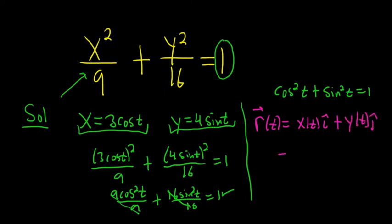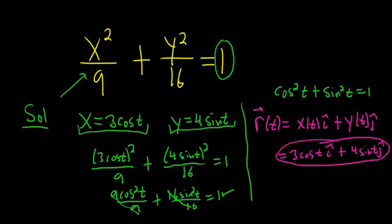Then you just plug in your functions: 3 cosine t i hat plus 4 sine t j hat. And that is the vector-valued function.